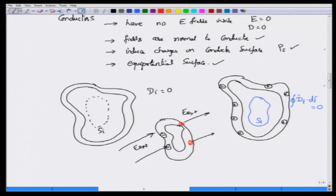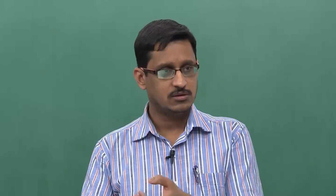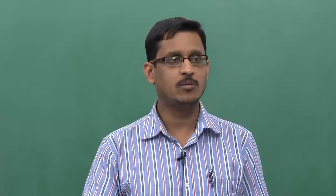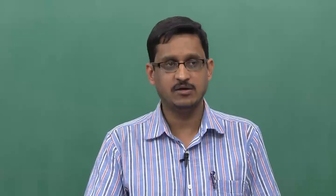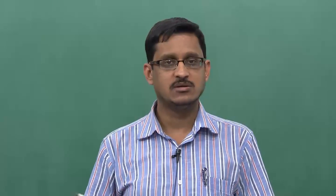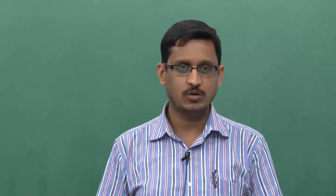You might ask: from Gauss's law, when exposed to an external field or induced charges, we can say D_i equals 0. But a closed surface integral of flux density can give you 0 even if equal amounts of D lines come in and go out — forming continuous tubes or field lines circulating and closing upon themselves such that there is no divergence. So how can we say there is no D_i?